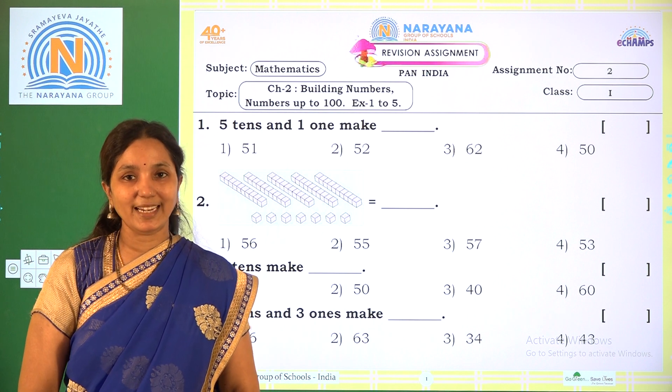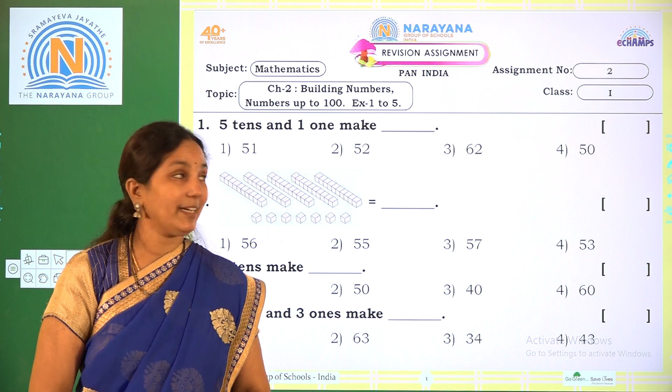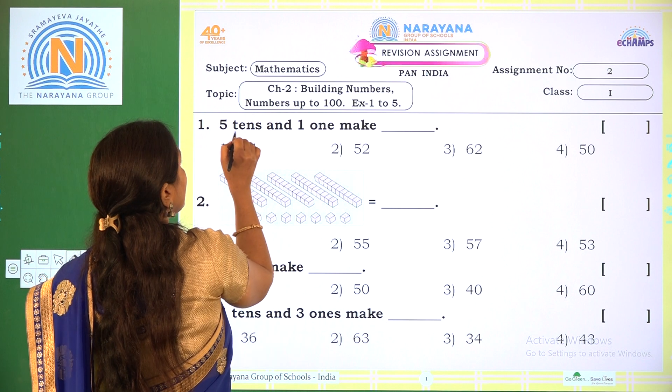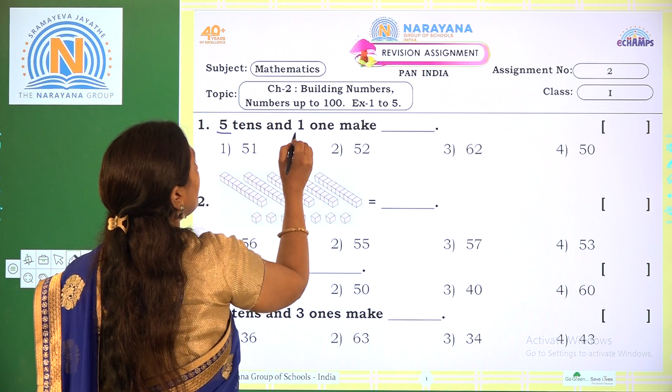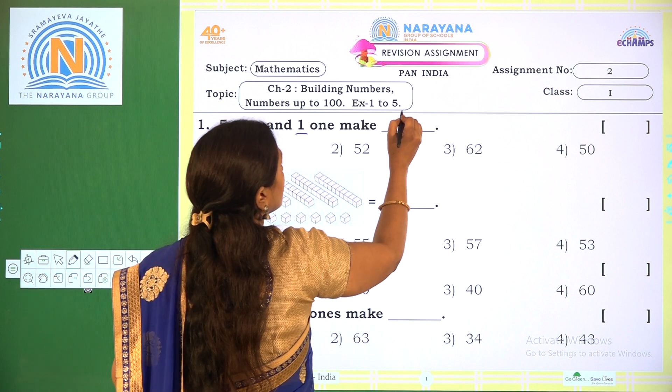Hi children, welcome to R&R Live Classes. Today our region assignment is Chapter 2, Building Numbers, numbers up to 100. You can refer to exercises 1 to 5.